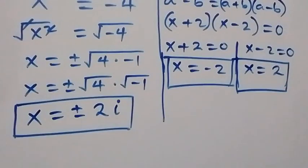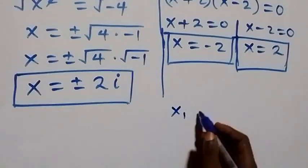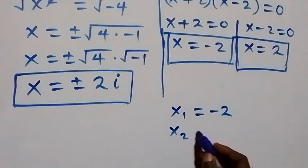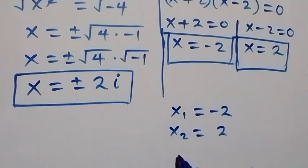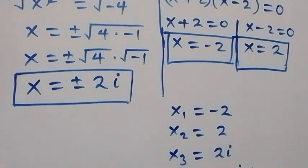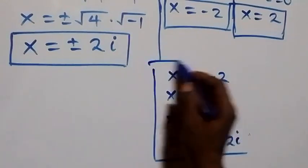Altogether we have four solutions: x₁ equals minus 2, x₂ equals 2, x₃ equals 2i, and x₄ equals minus 2i. These are the four solutions to the given problem.